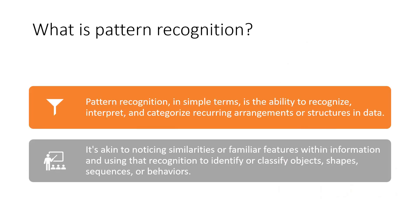Now, what is pattern recognition? It is the ability to recognize, interpret, and categorize recurring arrangements or structures in data. Once you identify the patterns available, that's called pattern recognition. It involves noticing similarities or familiar features within the information and using that recognition to identify or classify objects, shapes, sequences, or behaviors. Using this, further inferences can be obtained — we can identify classes, shapes, and sequences, all very clearly with pattern recognition.